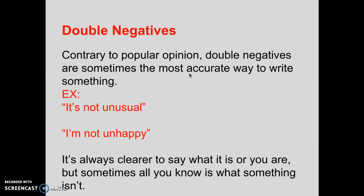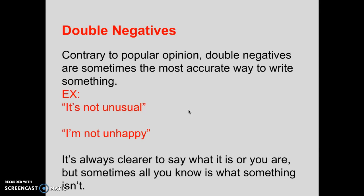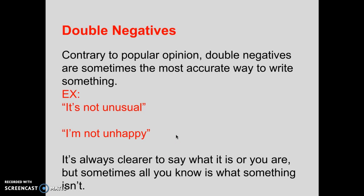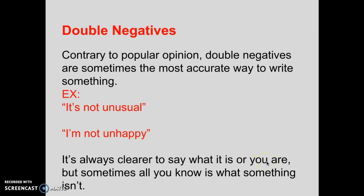It's always clearer to say what you actually are, which is why your English teachers are so strict about double negatives, and I am as well. But sometimes all you know is what something isn't. Maybe you don't want to go out on a limb and say something is totally usual, but at the very least you want to say it's not unusual — it does happen now and again, even if it's not completely usual. And maybe you're not quite sure if you're happy, but you do know that you're not unhappy. So double negatives do have their place, and they are far more helpful with very technical phrasing. There's a reason we discourage you from writing them, because it's always more accurate to say what something is versus what it's not — but sometimes that's all we know.